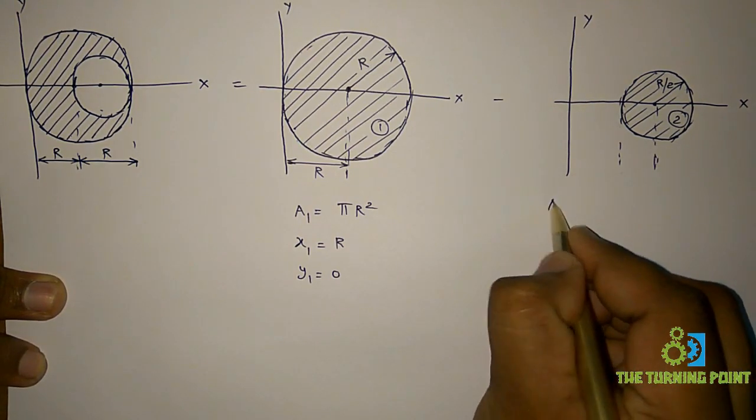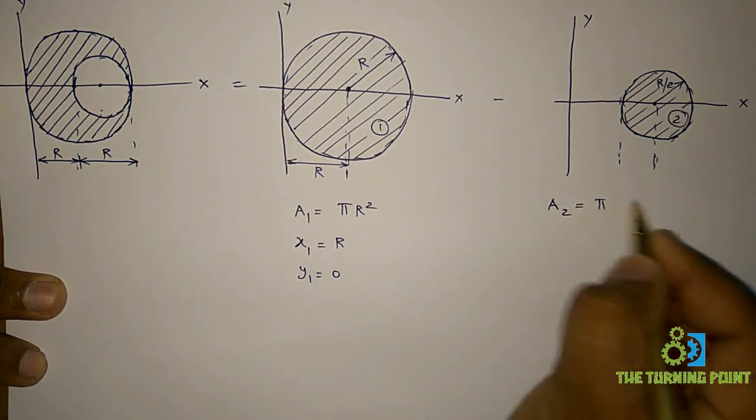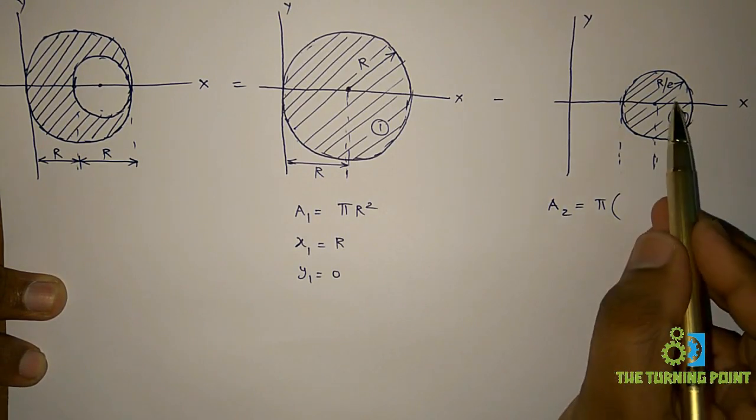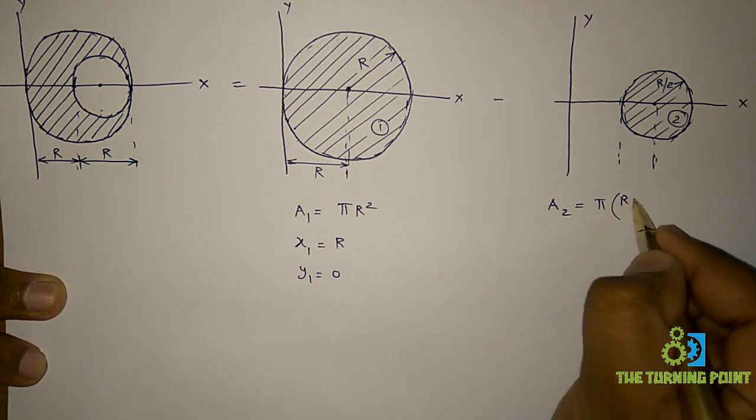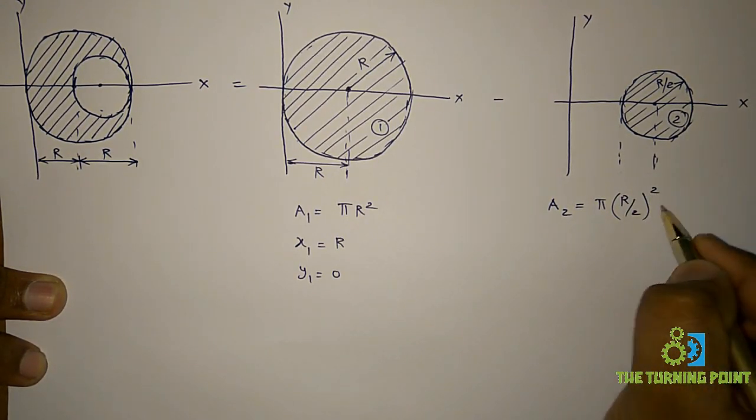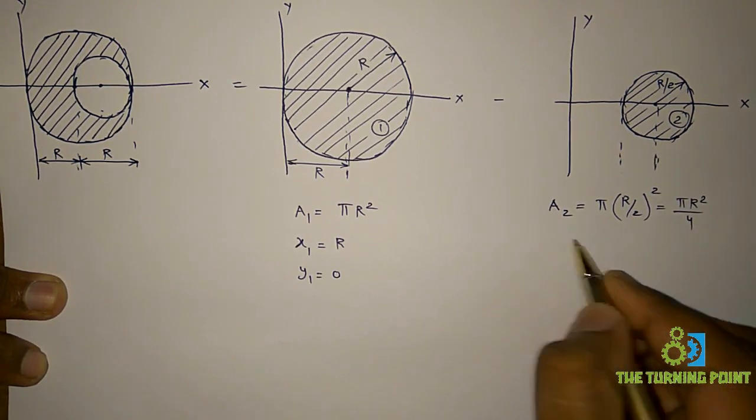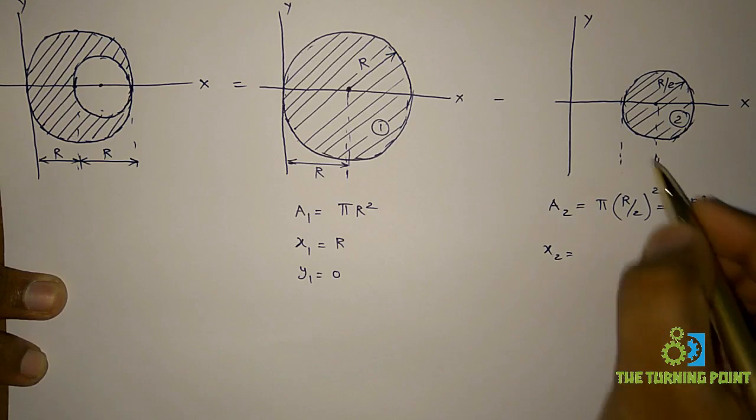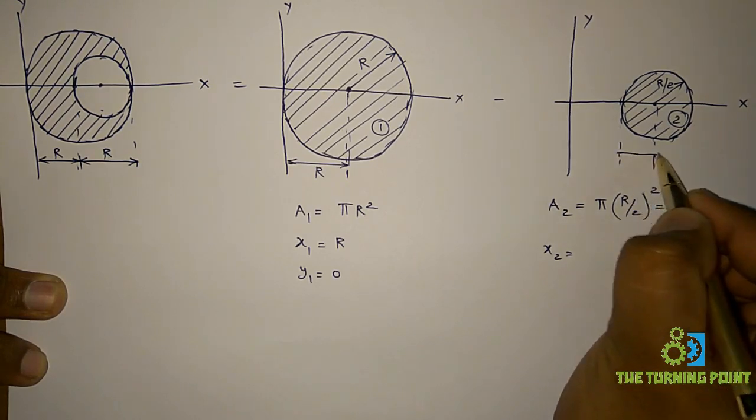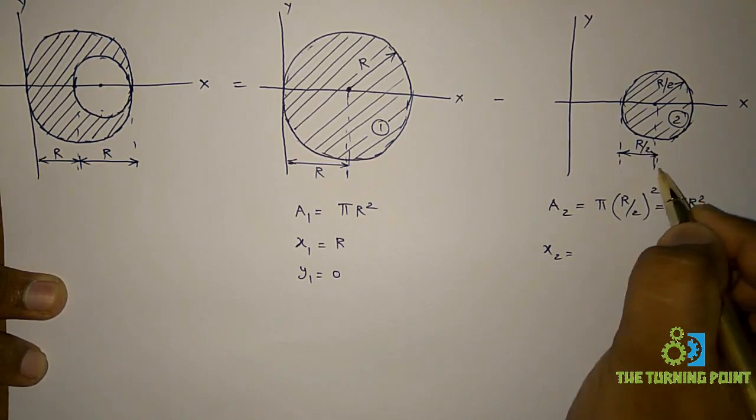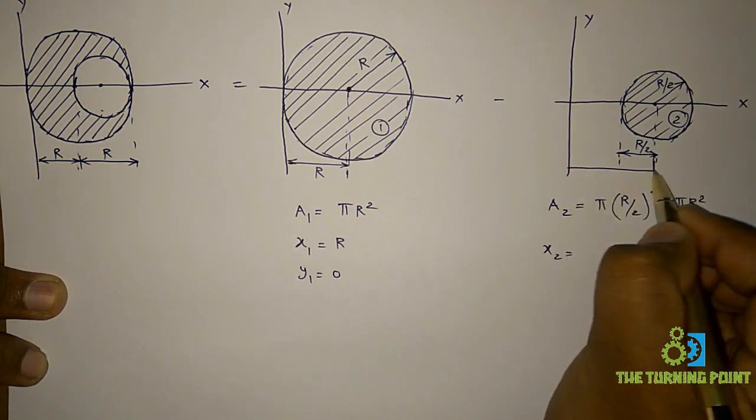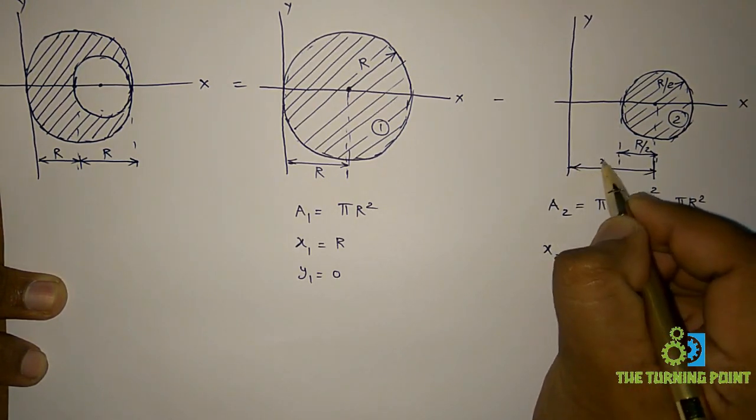For this one, area is pi into—so here, radius of this one is r by 2 whole square. So that is pi r square divided by 4. And x2 is, so this one we know it is r by 2. But x2 means it is a perpendicular distance from that point to y-axis.